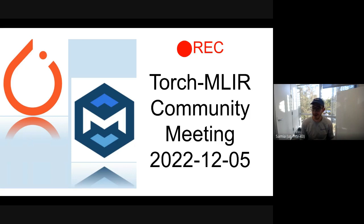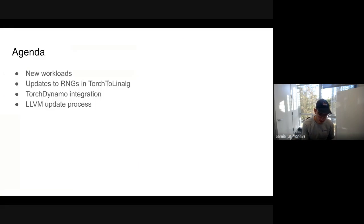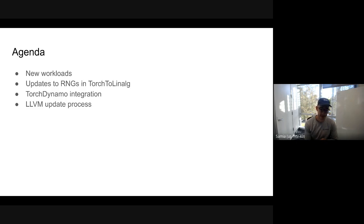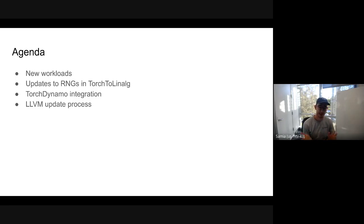Welcome to the community meeting for December. Today, Anush will get us up to speed on what's new in the workloads via TorchMLIR. We'll have brief updates on random number generation support in the Torch-to-Linalg pass. Sean will give an update on integrating Torch Dynamo, and lastly I'll talk about the new LLVM update process we've been following for the last month and a half.